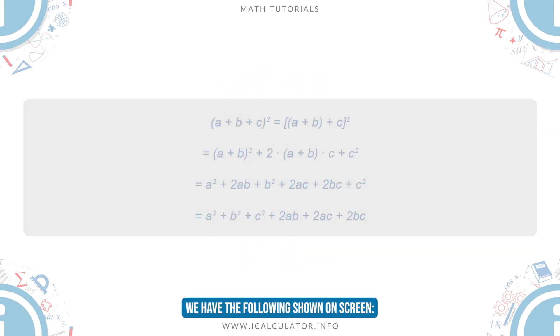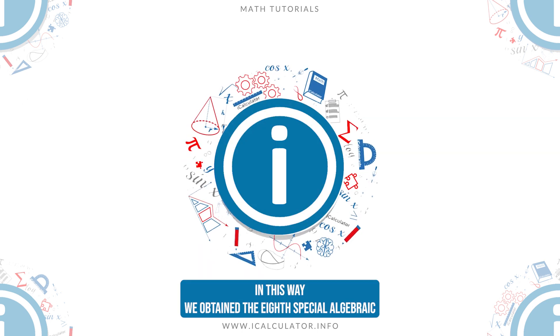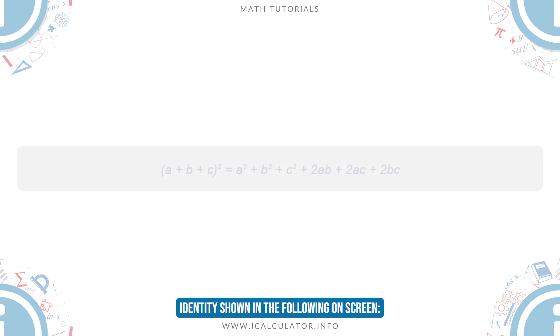We have the following shown on screen. In this way, we obtain the 8th special algebraic identity shown in the following on screen.